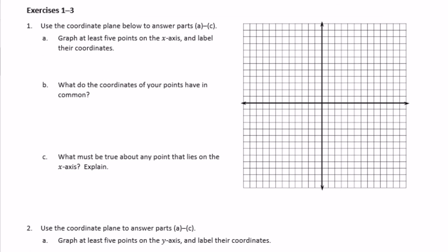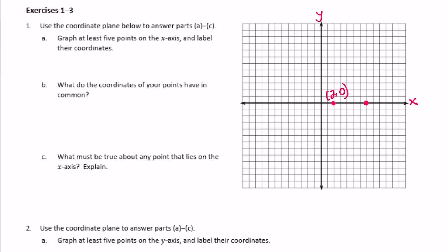Number one: use the coordinate plane below to answer parts A through C. Graph at least five points on the x-axis and label their coordinates. So this is the x-axis, this is y. I'll pick five points. Using a scale of 1, we have (2, 0), (7, 0), (5, 0), and some negatives: (-1, 0) and (-5, 0). We go over the x-value but up 0.